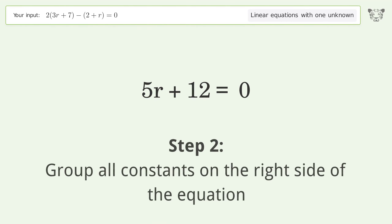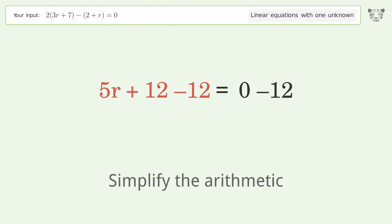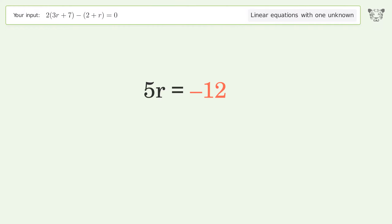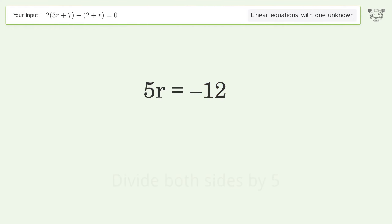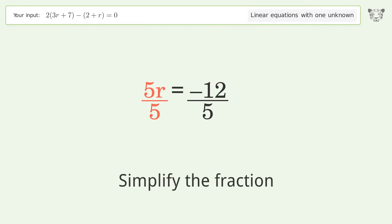Group all constants on the right side of the equation — subtract 12 from both sides. Simplify the arithmetic. Isolate r: divide both sides by 5 and simplify the fraction.